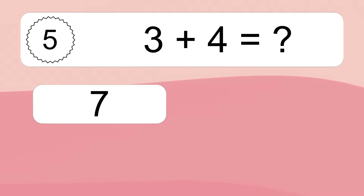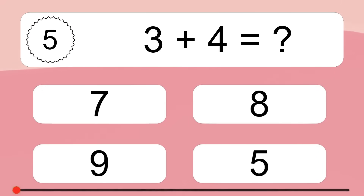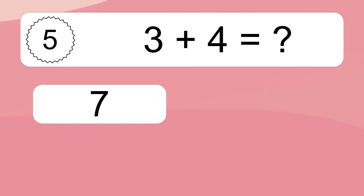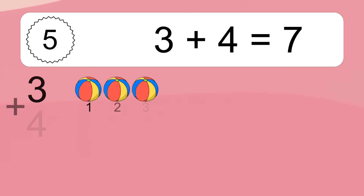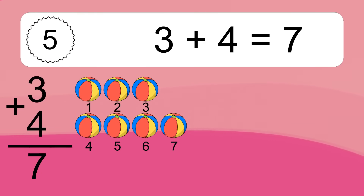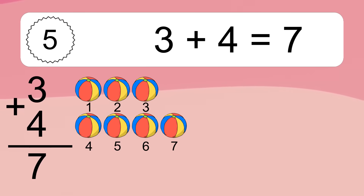3 plus 4 equals what? 3 plus 4 equals 7. Let's count it: 1, 2, 3, 4, 5, 6, 7.